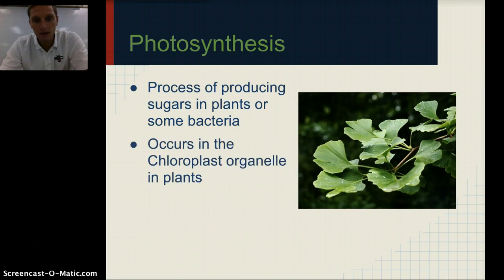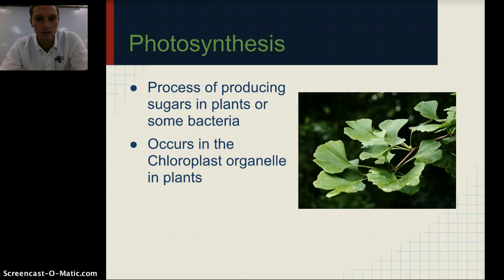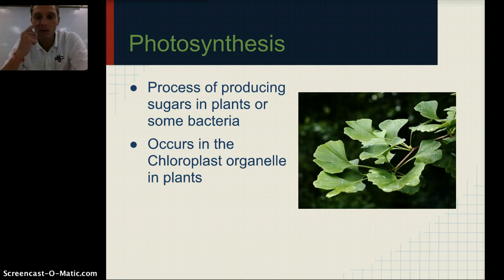Photosynthesis occurs in the chloroplast organelle in plants, and so this is where photosynthesis is taking place. Within the chloroplast organelles, there are small portions that are actually green in color. That's what produces the green color we see in most plant leaves — the pigment within those chloroplasts — and they're used to actually absorb the light.